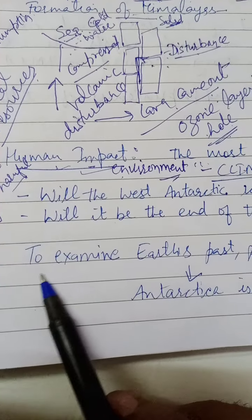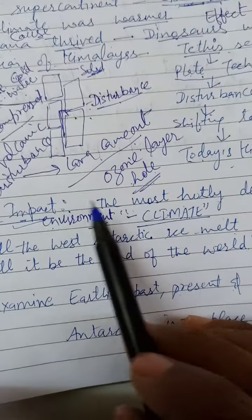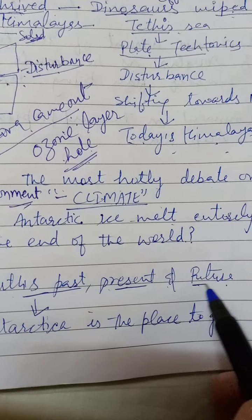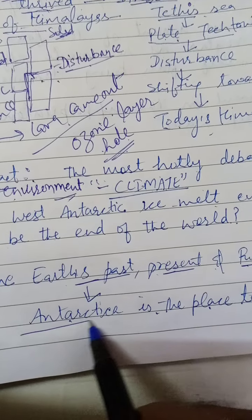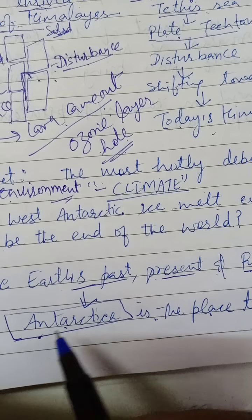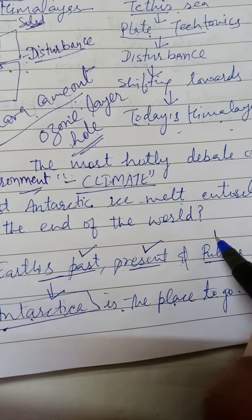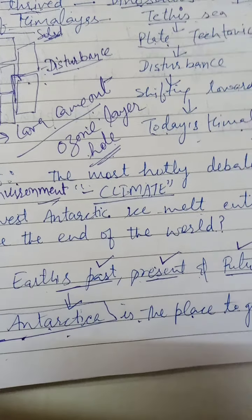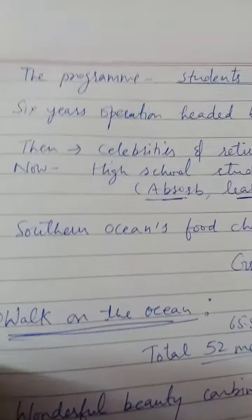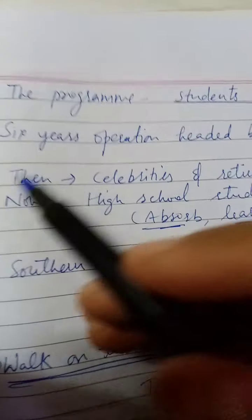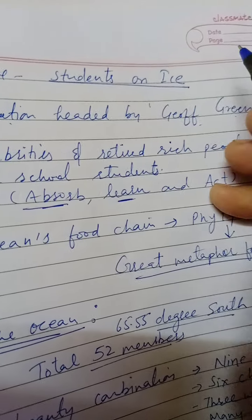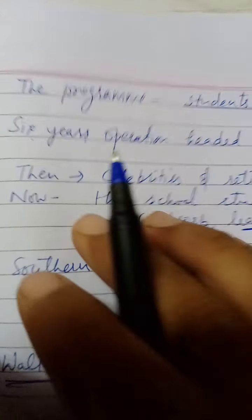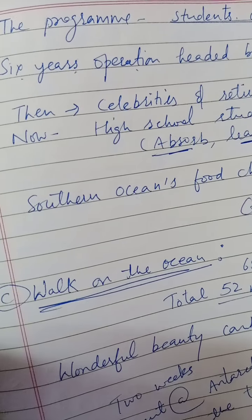In Part 2, it is also explained that if we want to examine what happened to the earth in the past, what is happening now, and what will happen in the future, then Antarctica is the place to go. This continent can give us all the answers about past, present, and future. The program 'Students on Ice' has been headed by Jeff Green for six years, and every year they go to Antarctica to study the earth's past, present, and future.